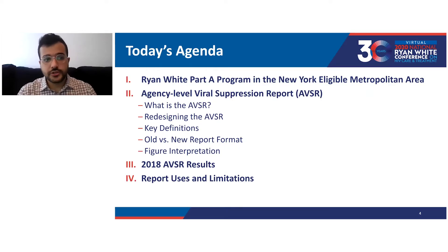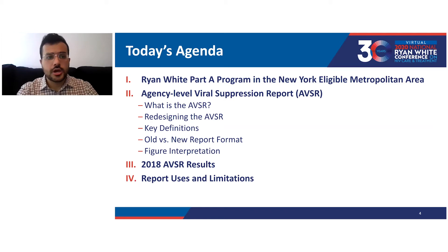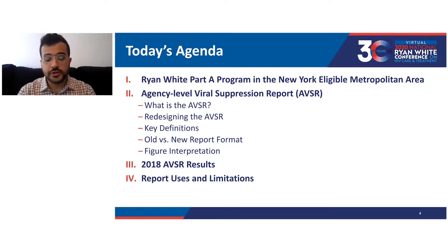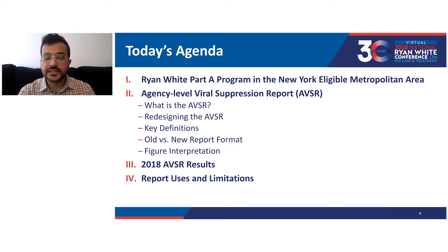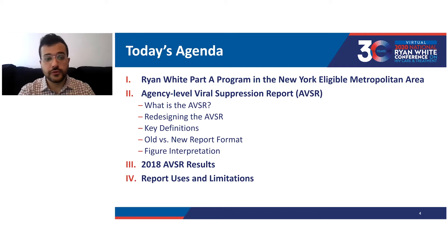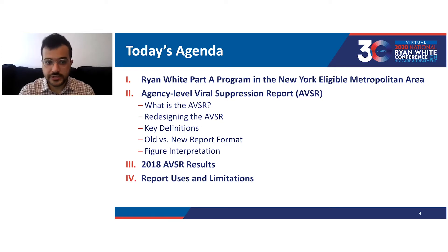Today's agenda: the presentation will be divided into four main parts, with parts two and three taking up the majority of our session. We'll start with a quick overview of the Ryan White Part A program in the New York eligible metropolitan area, then dive into the Agency-Level Viral Suppression Report, or AVSR, covering what it is, its redesign, key definitions, old versus new report formats, and figure interpretations. After that, we'll go over the 2018 AVSR results and wrap up by talking about the report's uses and limitations.